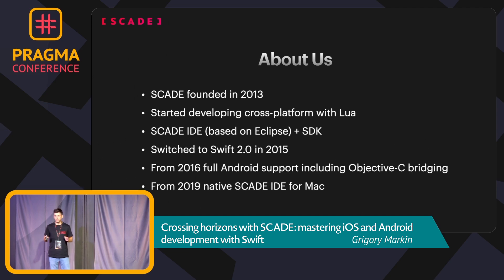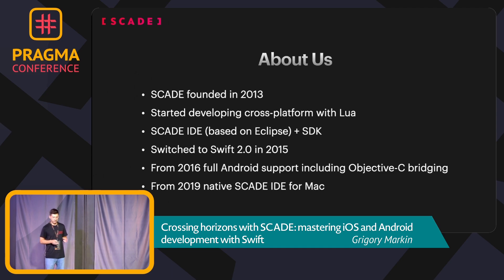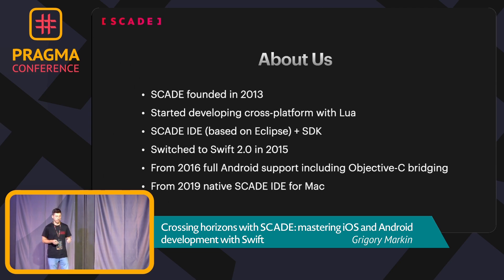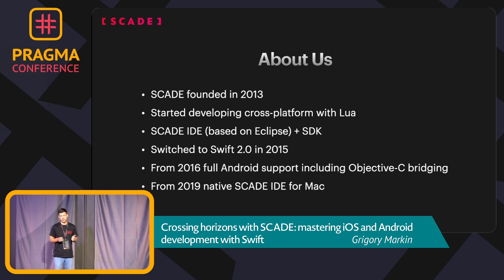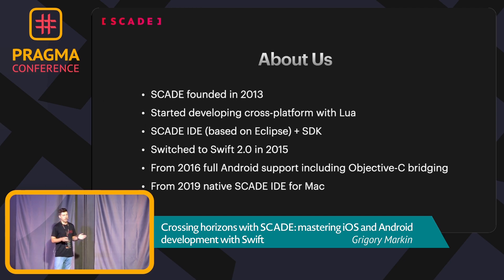A couple of words about our project. We started in 2013 building cross-platform with Allure as a programming language, and we quickly understood it's a pain to use a language that's not native to any platform. We had our own IDE and started developing mobile apps with Allure. But when Swift 2.0 came out, we were impressed by the language, and in 2015 we decided to switch to Swift — a language native to the platform. Starting from 2016 we had full Android support including Objective-C, and we deprecated Objective-C porting starting from Swift 5.5 because it took extremely many resources.